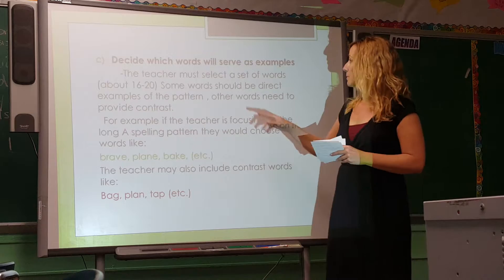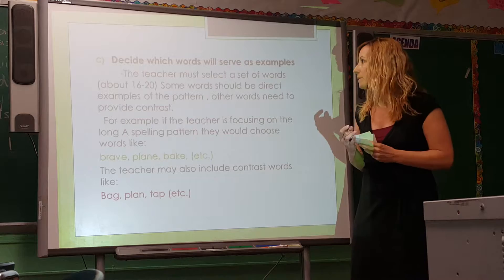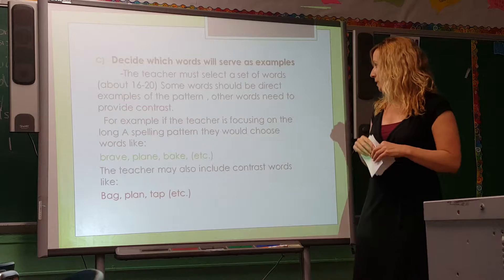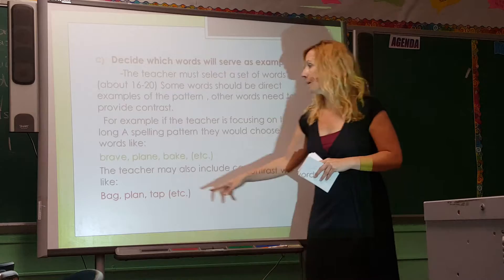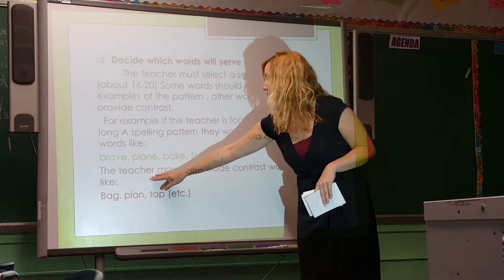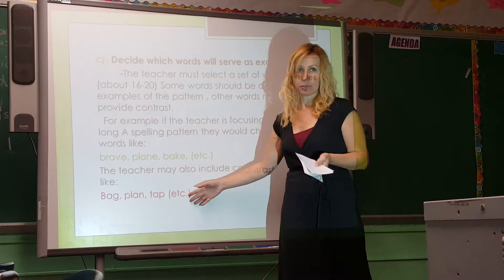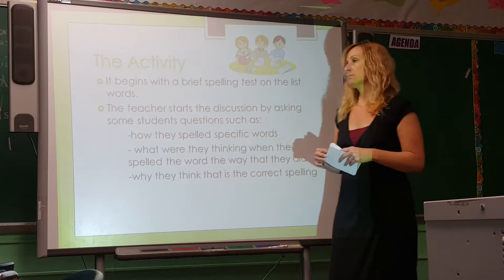In planning, decide which words will serve as examples. The teacher must select a set of words, about 16 to 20. Some words should be direct examples of the pattern; other words need to provide contrast — the opposite. For example, if the teacher is focusing on the long A spelling pattern, they would choose words like brave, plain, fake, and other words in that family. The teacher may also include contrast words like bad, plan, tap — because those are short A sounds.